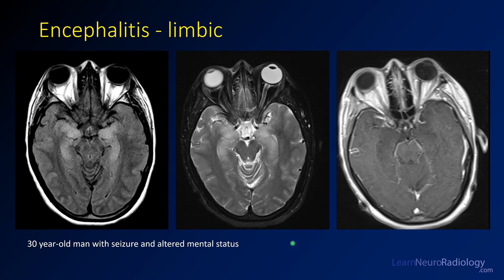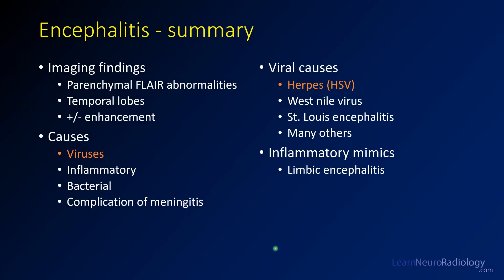This is an example of limbic encephalitis — an inflammatory encephalitis. This is a 30-year-old man with seizure and altered mental status. On FLAIR there is bilateral involvement of the medial temporal lobes, which are T2 hyperintense. On post-contrast imaging there is very little or no enhancement. This person had autoimmune encephalitis with anti-GAD antibodies. Limbic encephalitis is a non-infectious cause of encephalitis that can mimic the infectious form. In summary: encephalitis shows parenchymal FLAIR abnormalities, the temporal lobe is a favored location, viruses are the most common cause with herpes being the most serious, and limbic or autoimmune encephalitis can have a similar appearance.